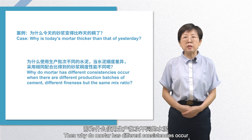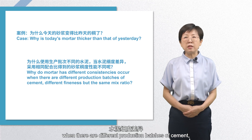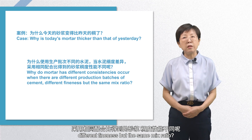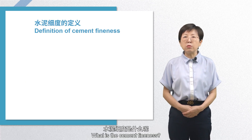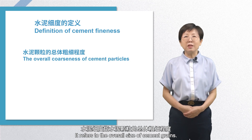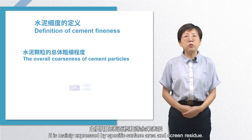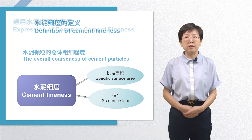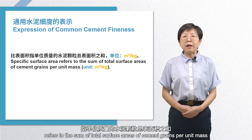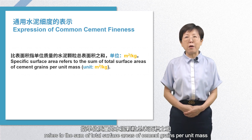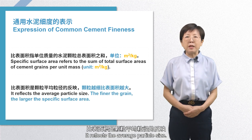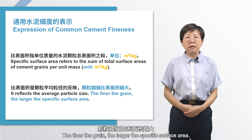Then why do mortars have different consistencies when there are different production batches of cement, different fineness, but the same mix ratio? What is cement fineness? It refers to the overall size of cement grains, and is mainly expressed by specific surface area. Specific surface area refers to the sum of total surface areas of cement grains per unit mass, with unit square meter per kilogram. It reflects the average particle size — the finer the grain, the larger the specific surface area.